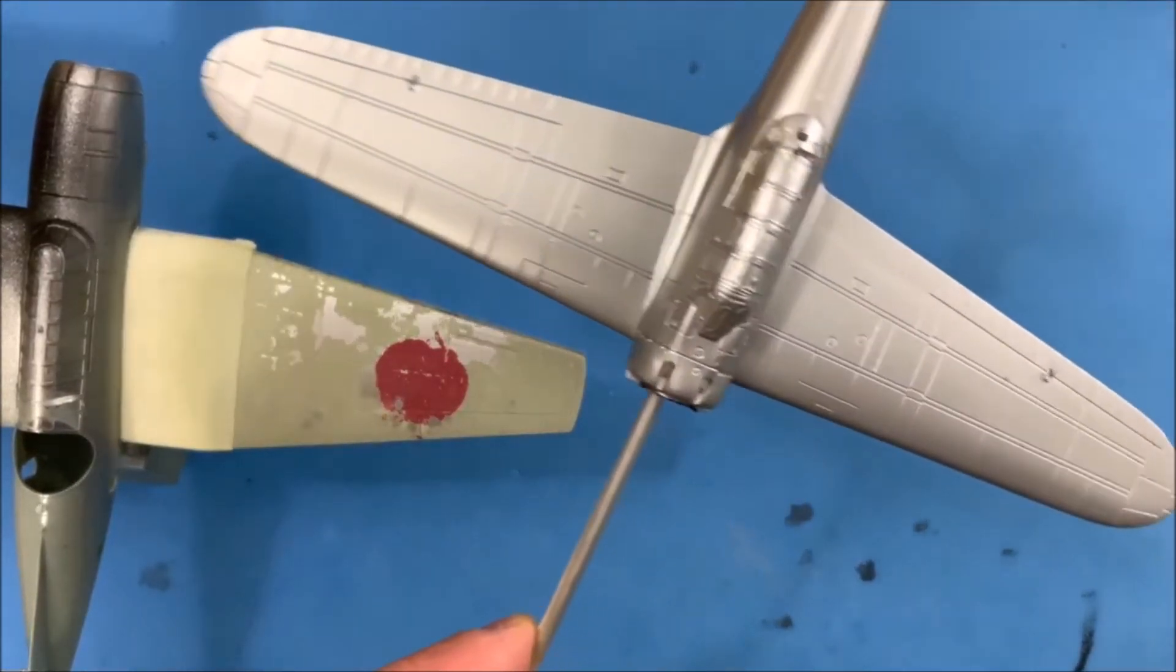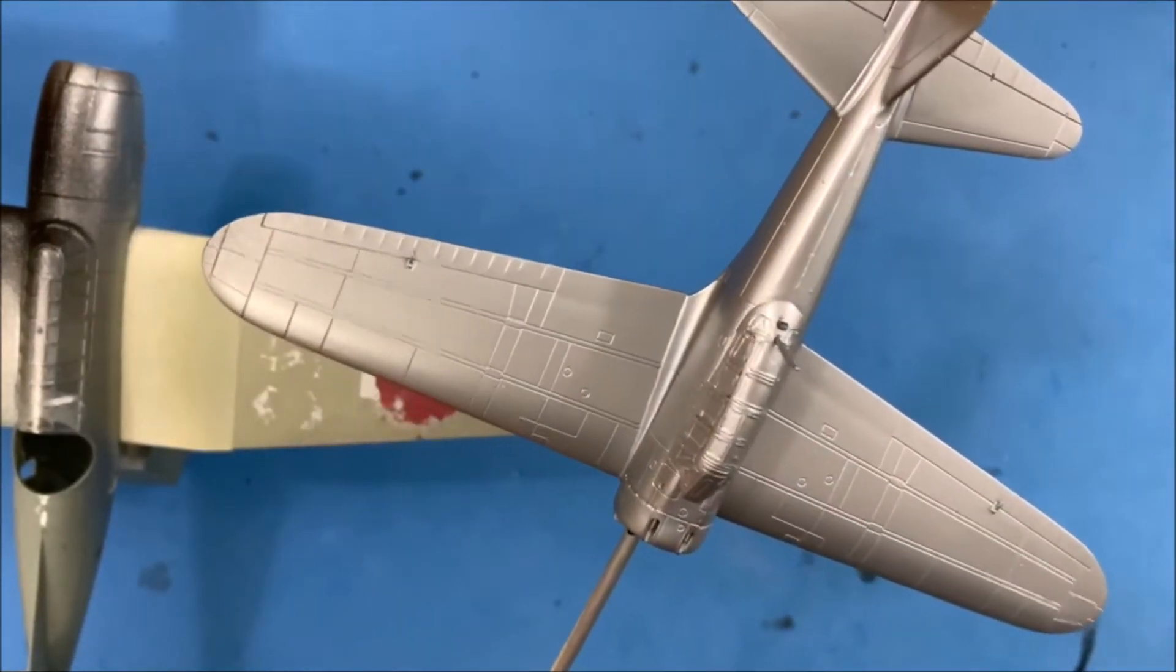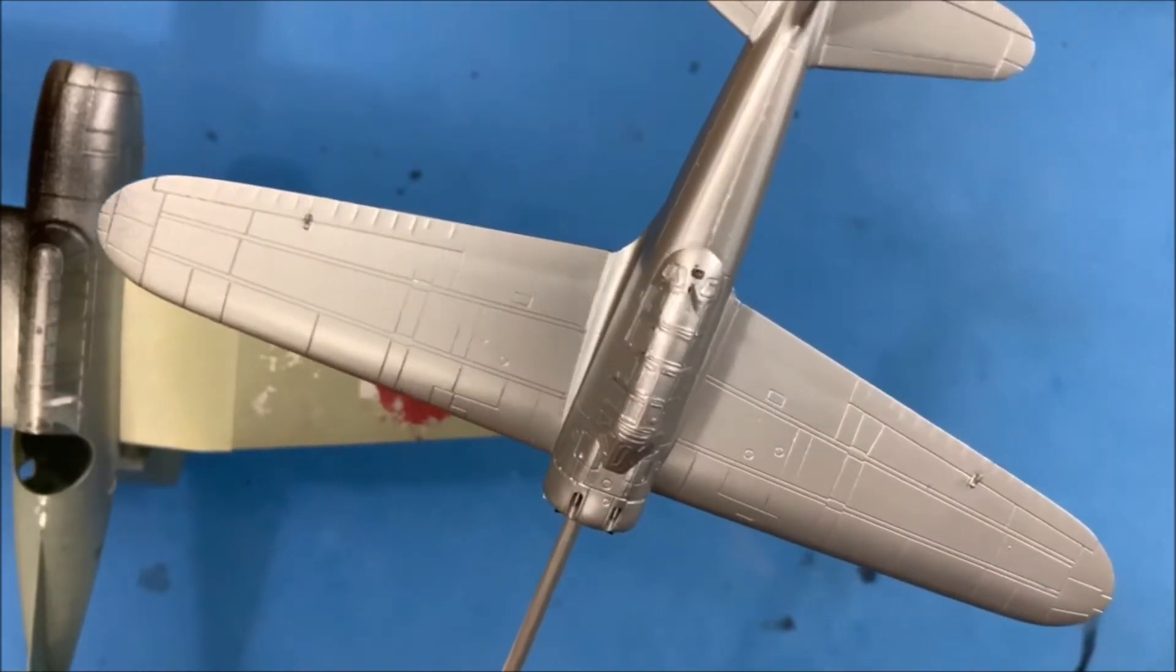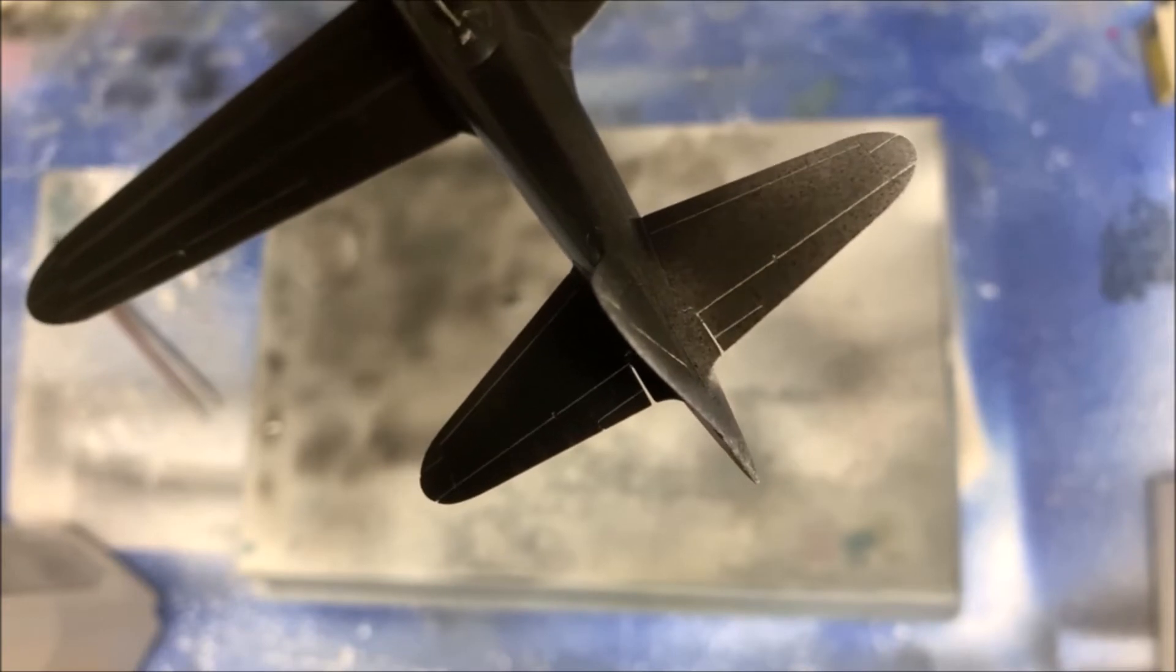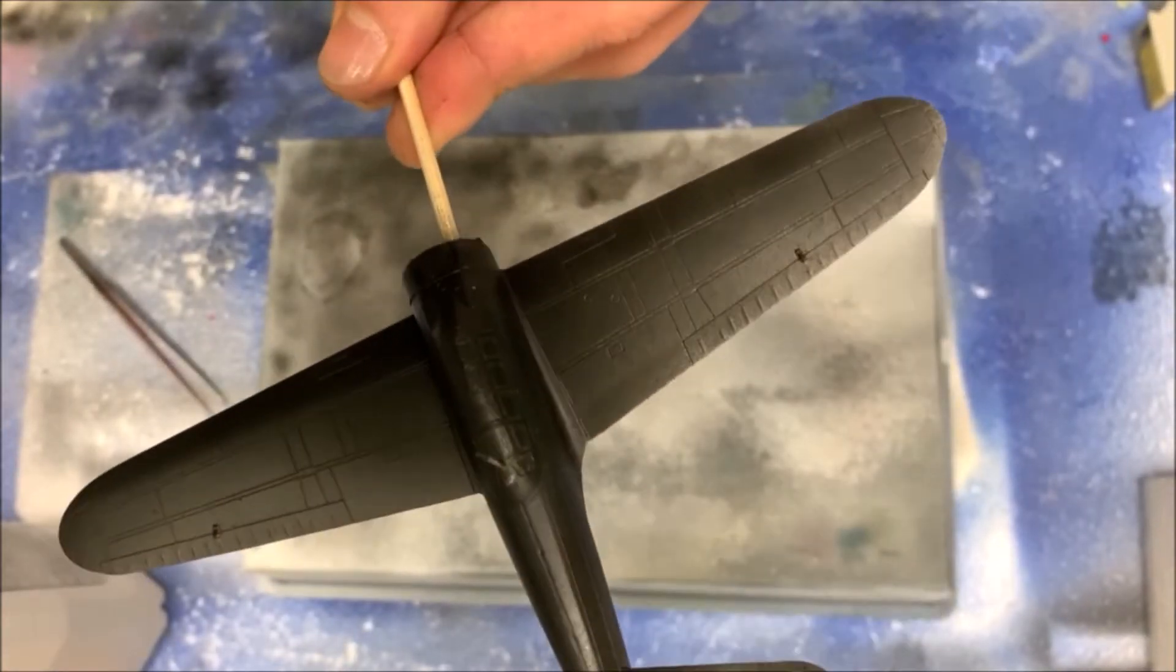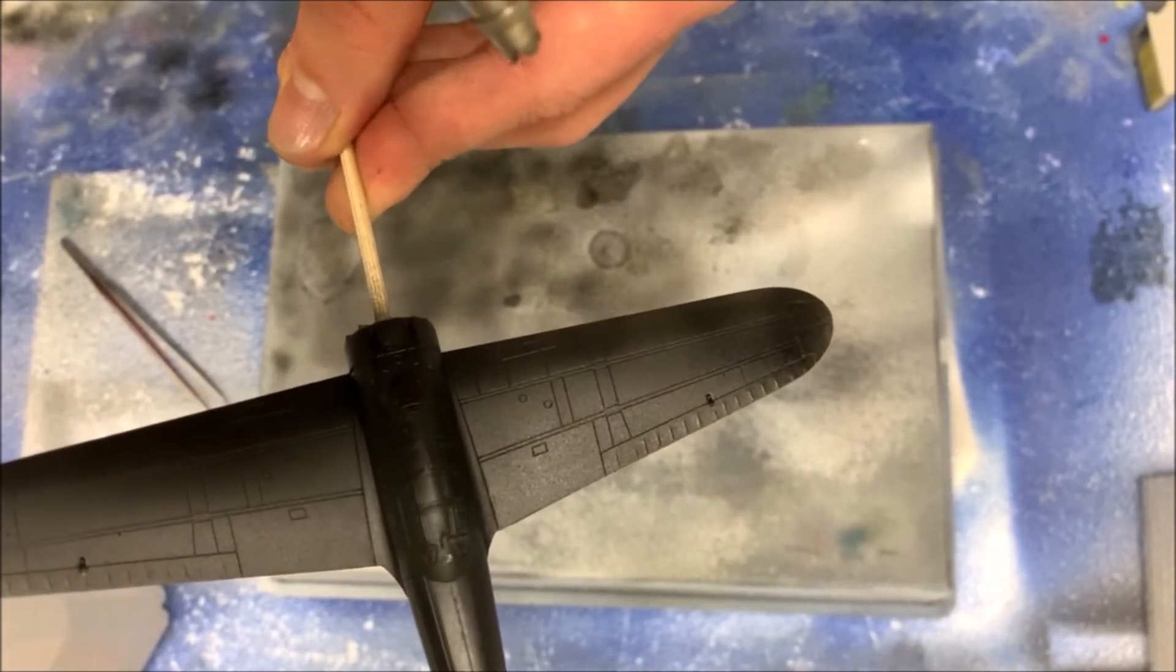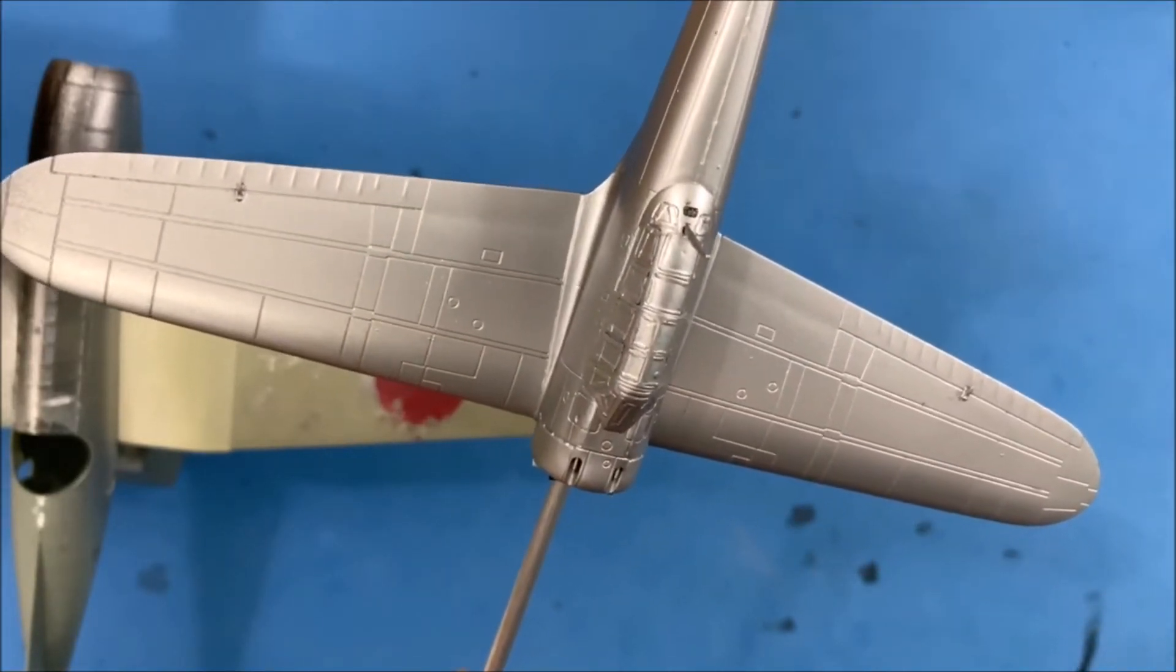As you can see I've got the plane all painted up here in bare metal silver. I just did a black primer and then the Tamiya AS12 bare metal silver over that.